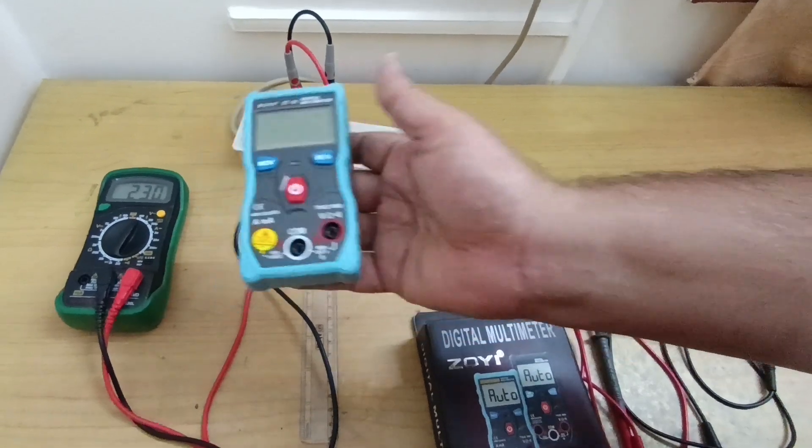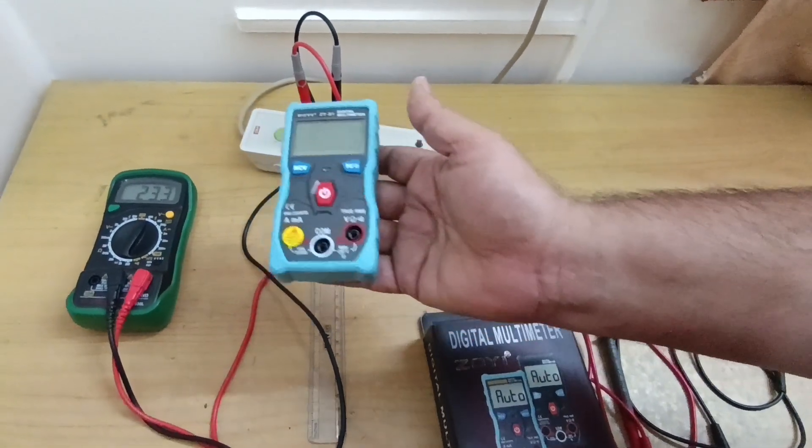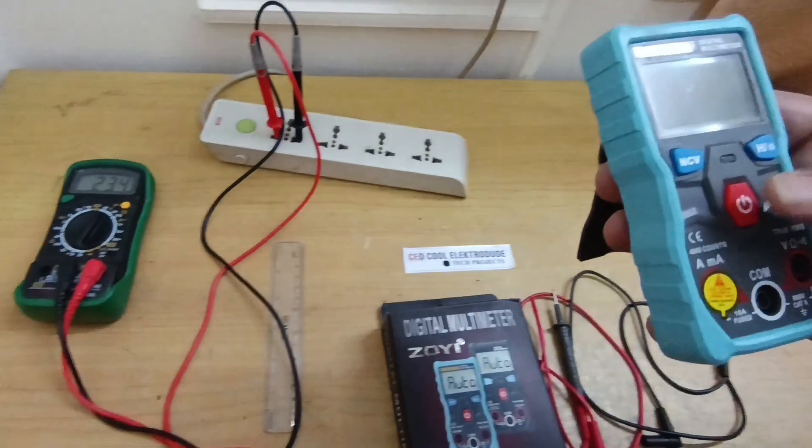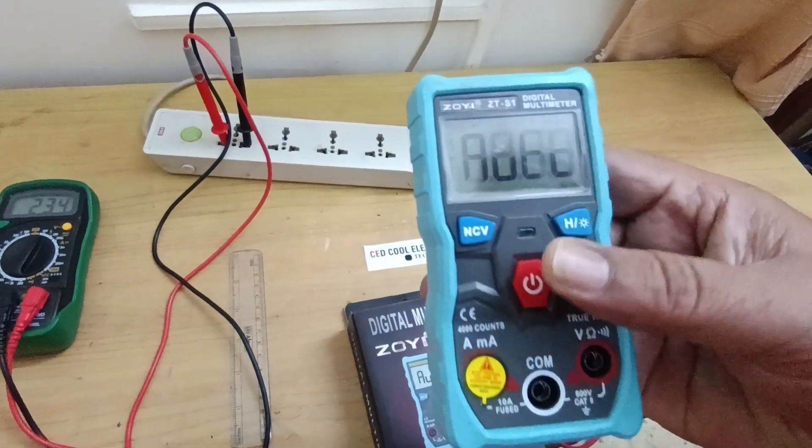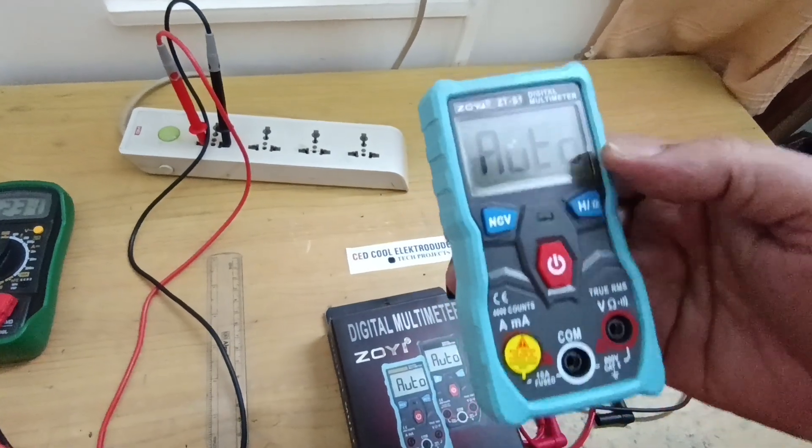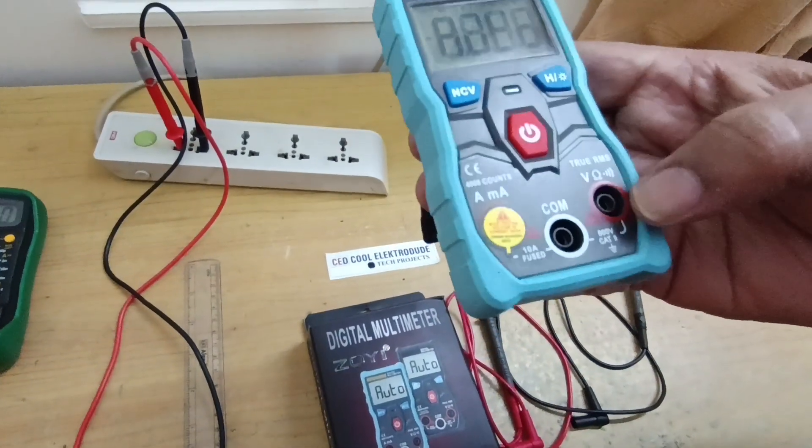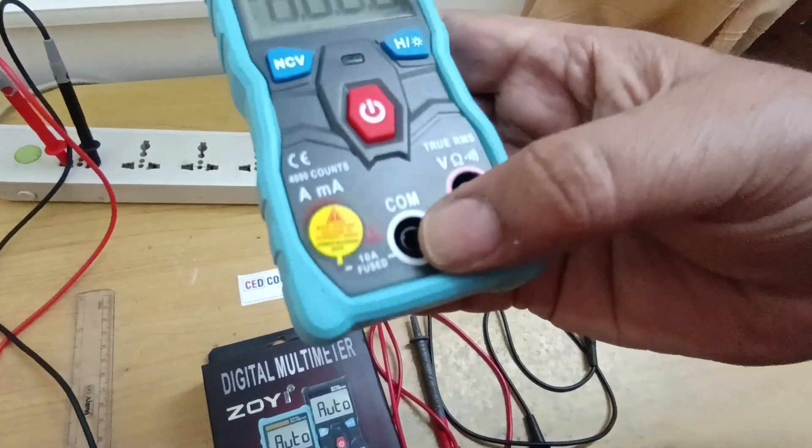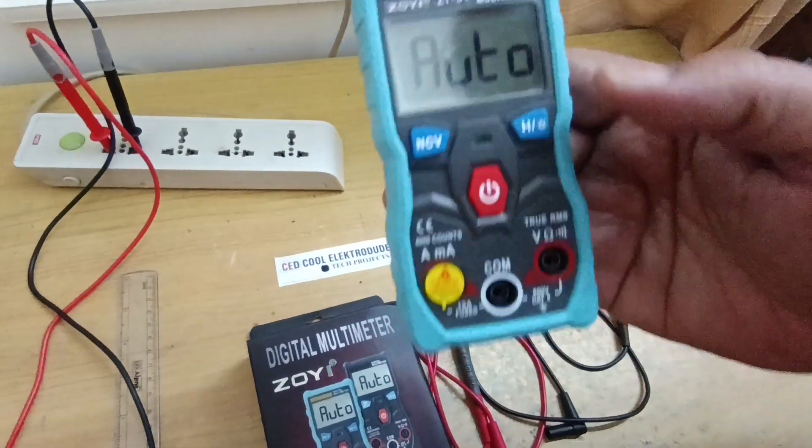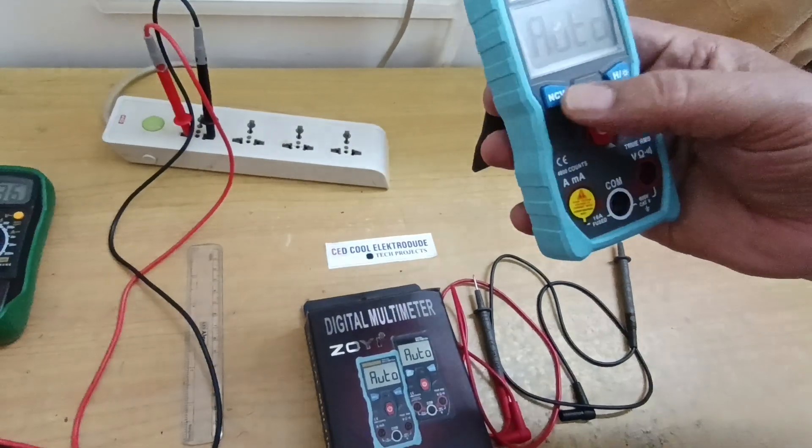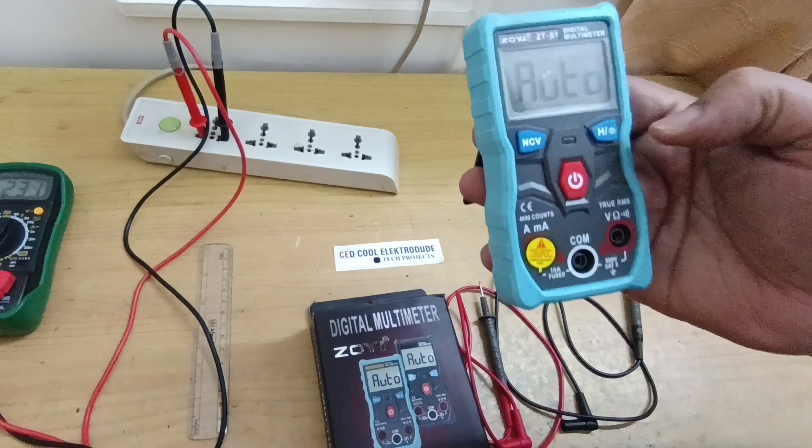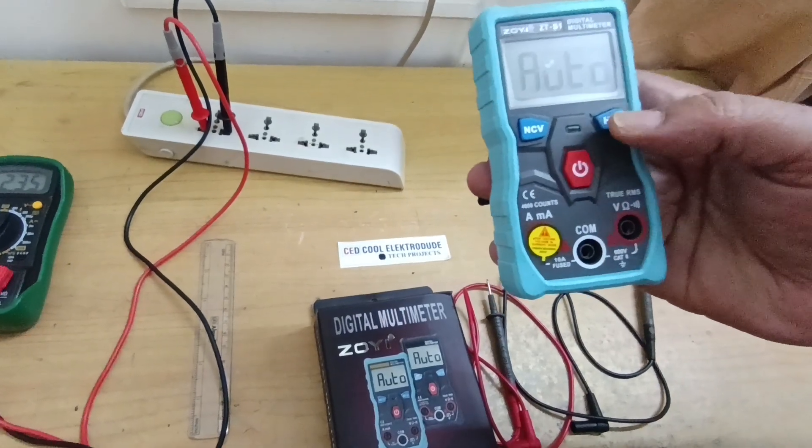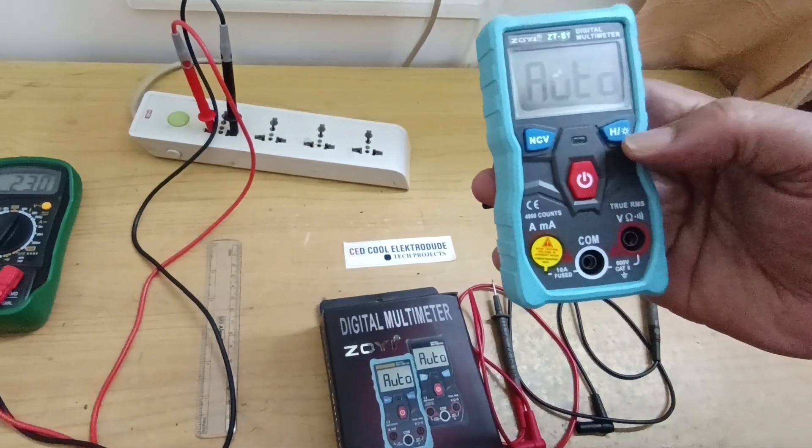We just power on the meter by pressing and holding the button. Here you can see this is the positive terminal and this is the negative terminal connection. It has a stand like this, and this is NCV, which means non-contact voltage measurement. Here is the hold button for holding measurements.